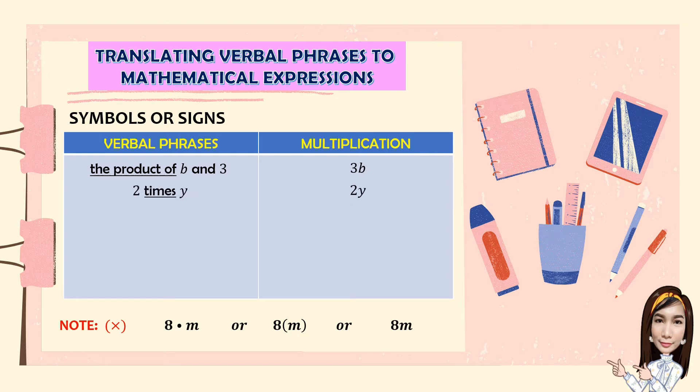2 times Y, 2Y. Twice Y is the same as 2Y. Thrice A, 3A. 1 fourth of X, 1 fourth X. M multiplied by 8, 8M.